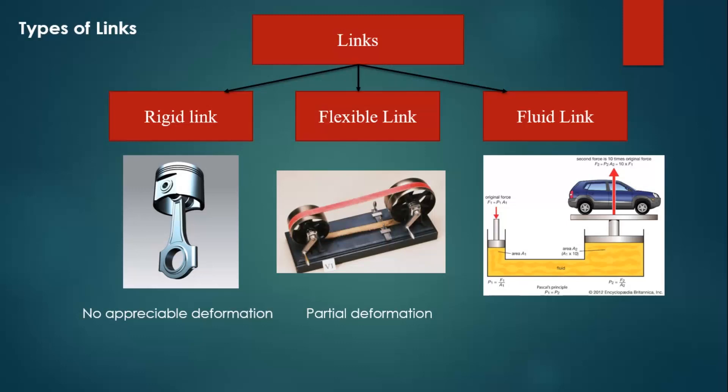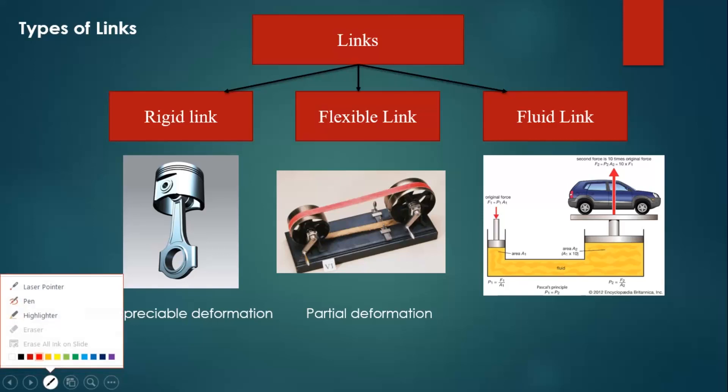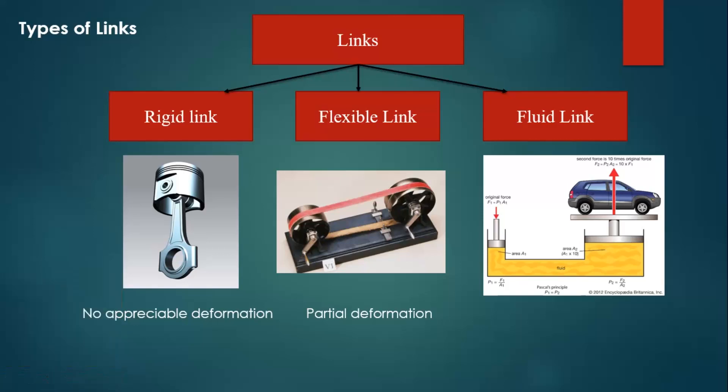Hi, this is Karthik Ayyan, welcome to my YouTube channel. We are mechanical engineers, so today let us discuss about mechanics of machines - basic things. Let us discuss types of links. The links are divided into three major categories: one is rigid link, another one is flexible link, and the last one is fluid link.